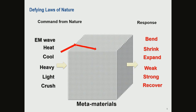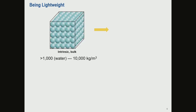With metamaterials, if you send an electromagnetic wave in, it bends over the material. If you hit it, it will shrink. And if you crush the material, it can completely recover. So how would that be possible? That's going to be really hard to achieve, and I'm going to give you some very concrete examples for structural material applications.